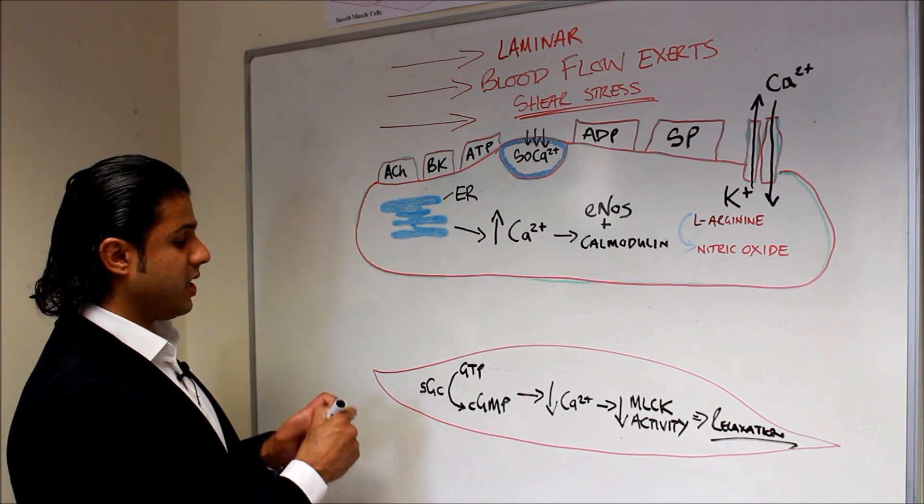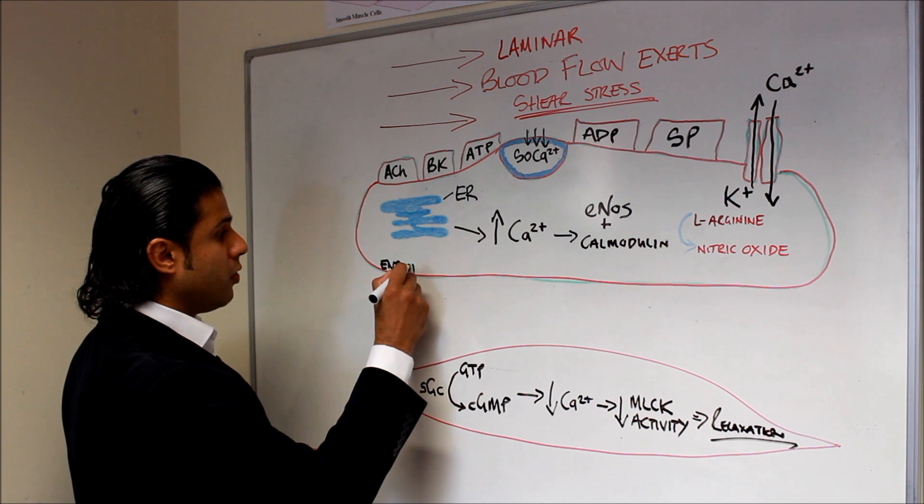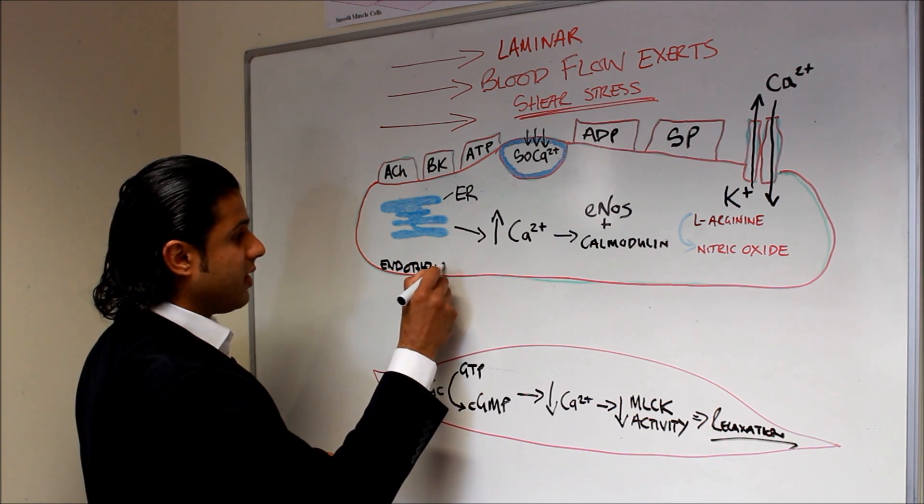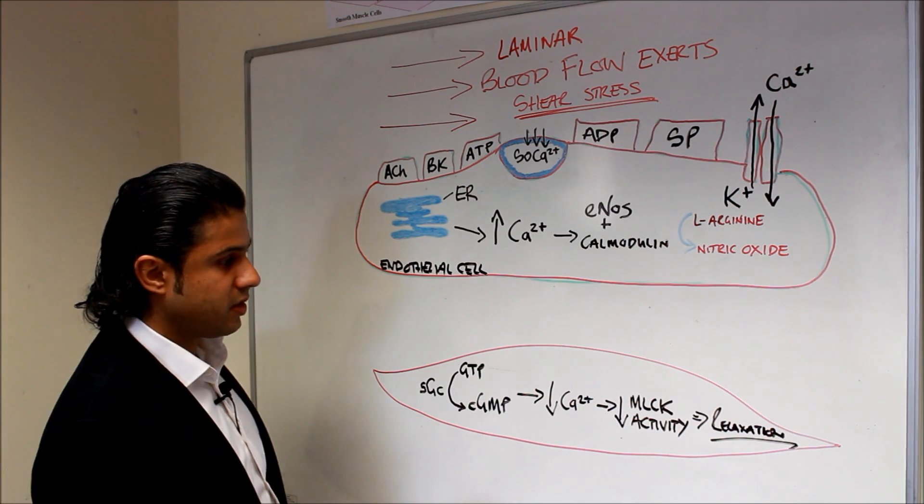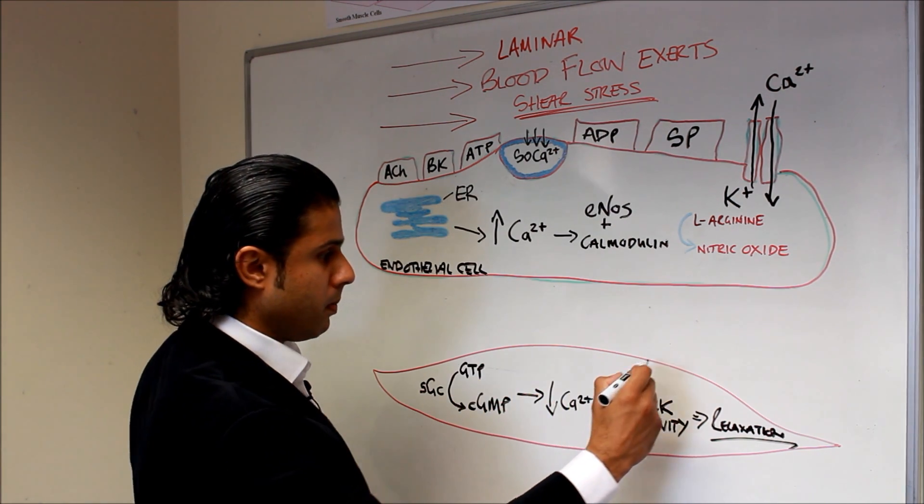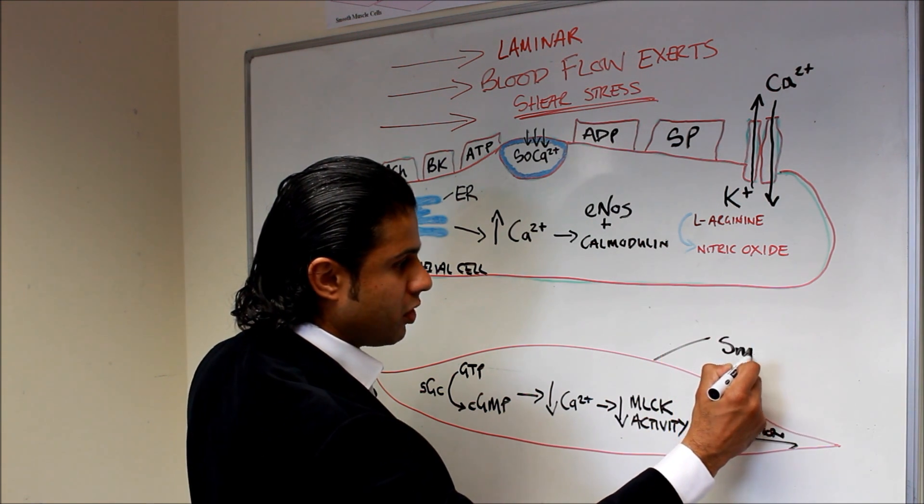Now just before we start, this here is an endothelial cell. So I'll put that down here, endothelial cell, and this kind of tear-shaped object here or drawing here is a smooth muscle cell.